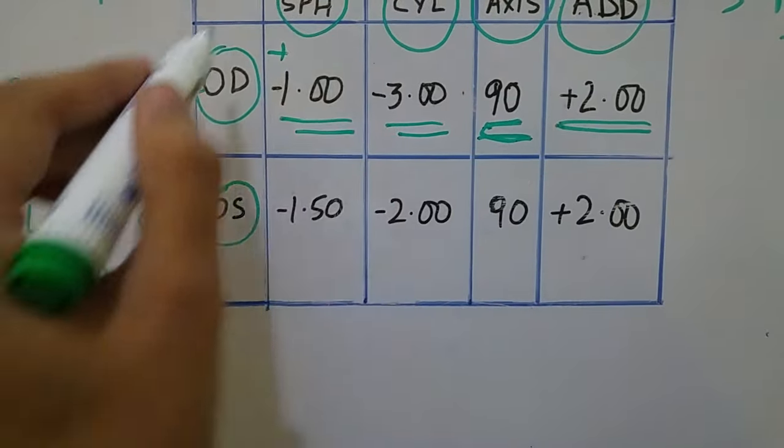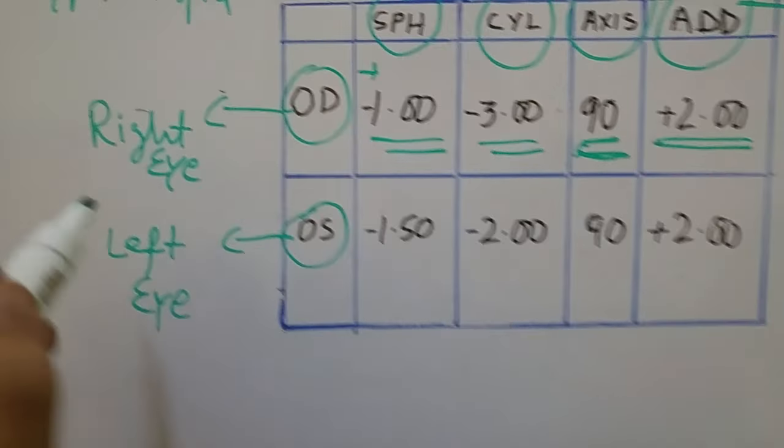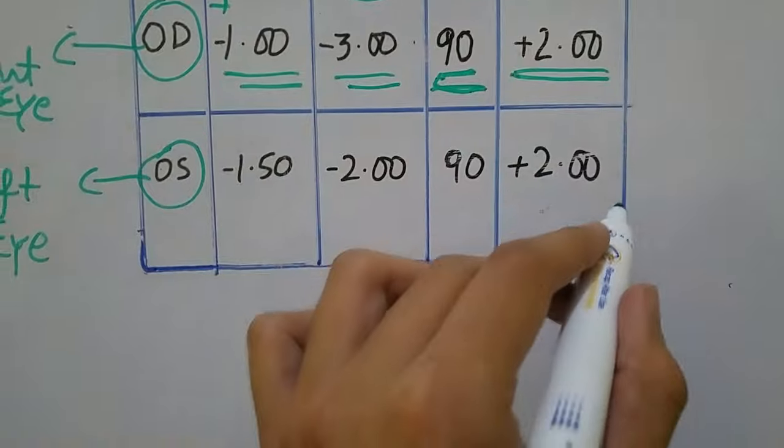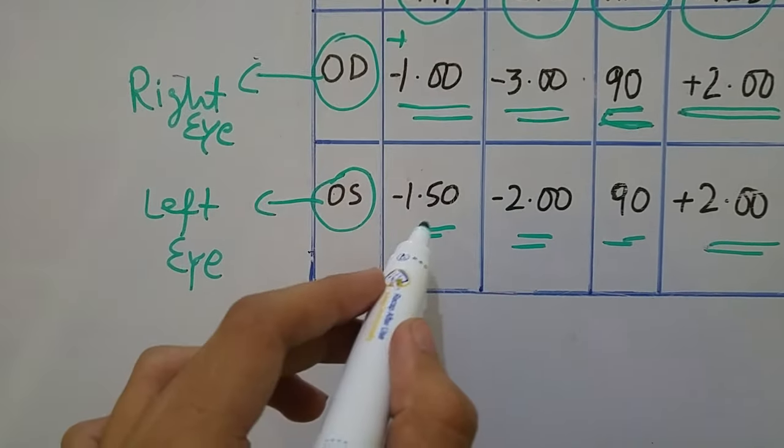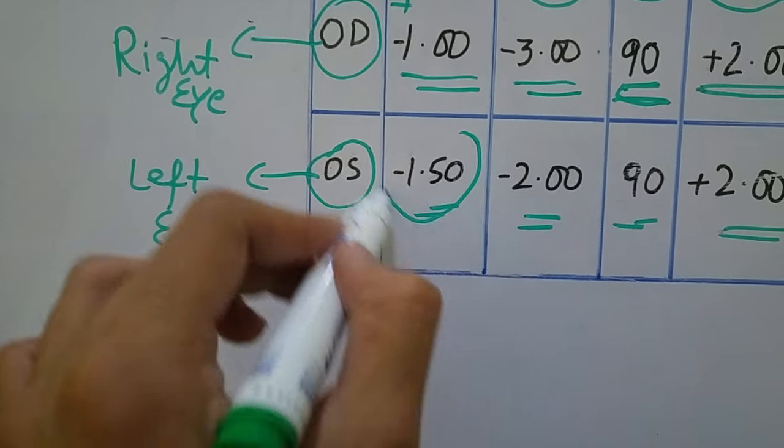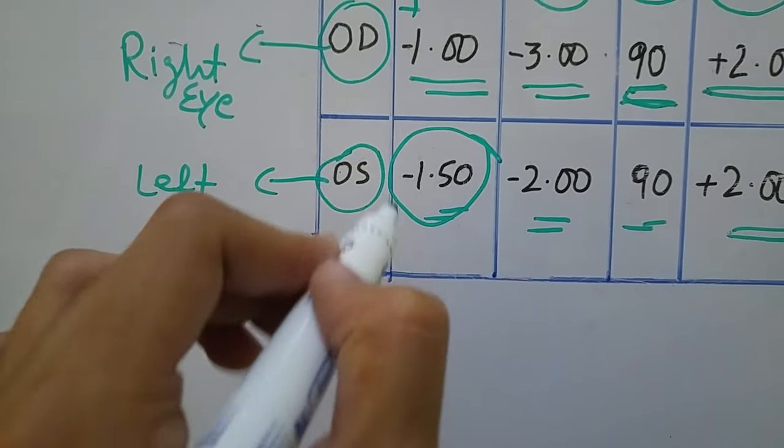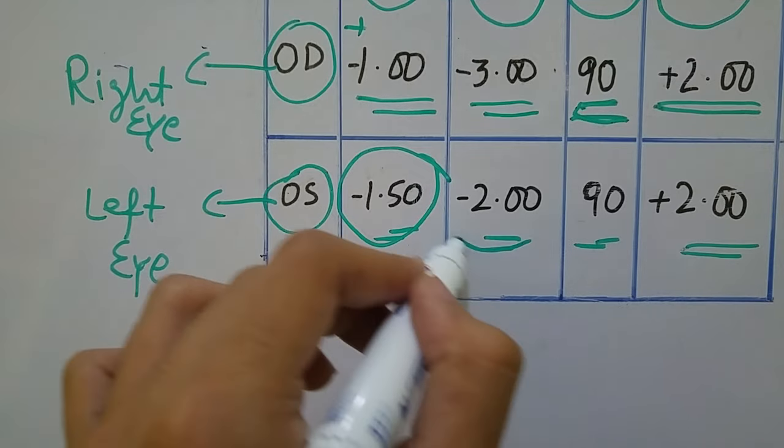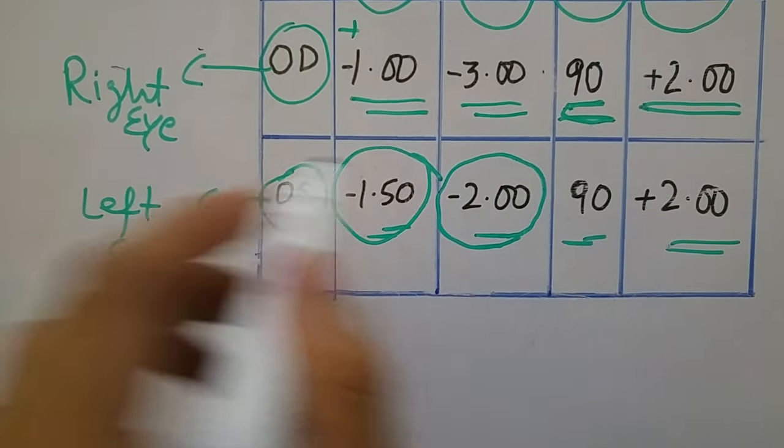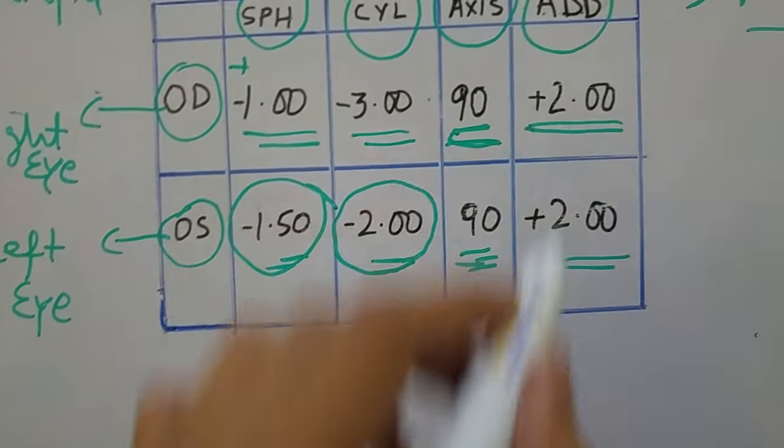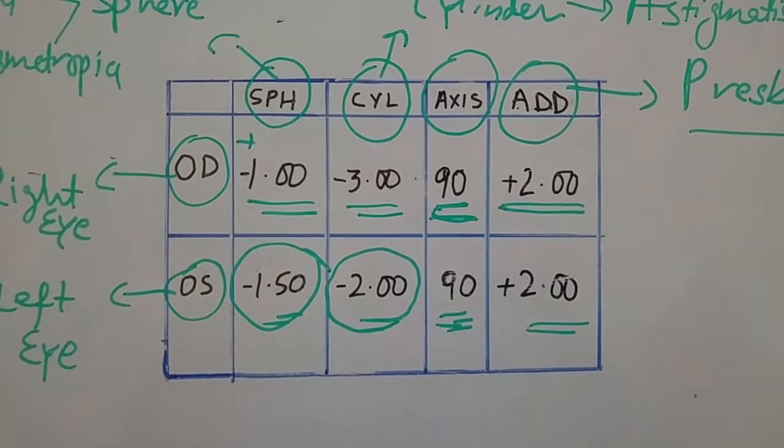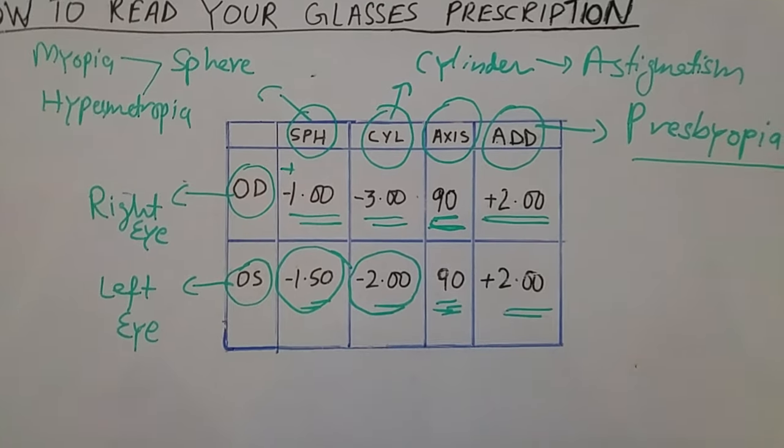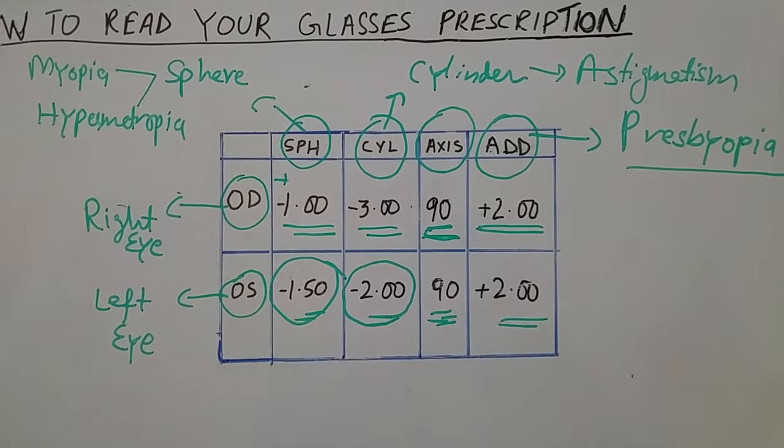And the first row is the number of your right eye and the second row, whatever figures are written, these are numbers of your left eye. In this case there is 1.50 diopter of myopia since minus is here, and 2 diopter cylinder at 90 degrees, and near addition is plus two. Normally the near addition in both eyes is same. So this is how you can read your glasses prescription.